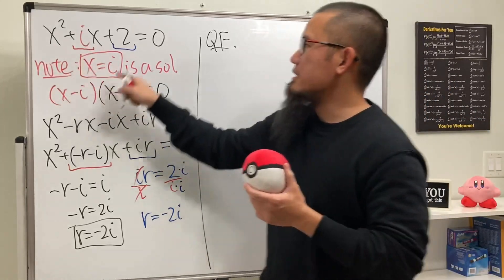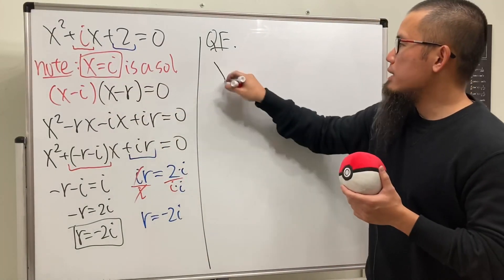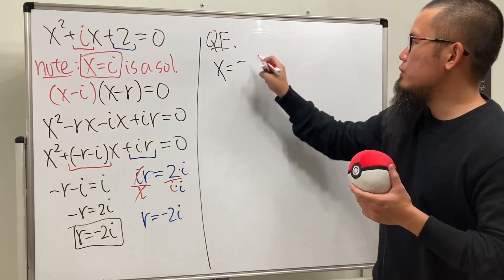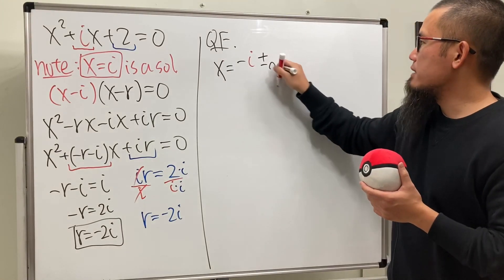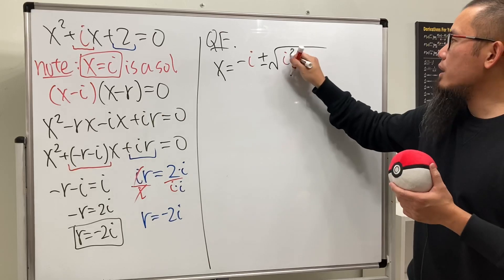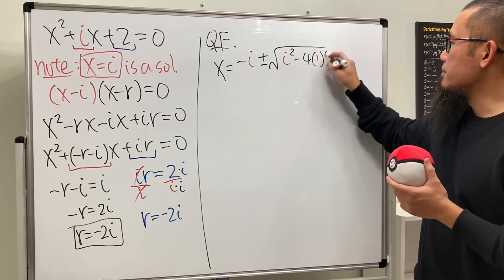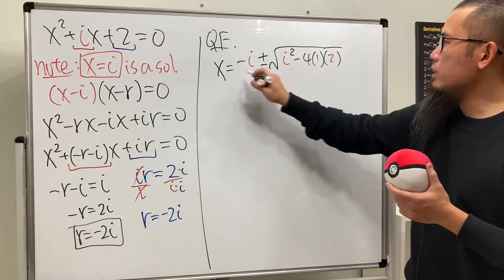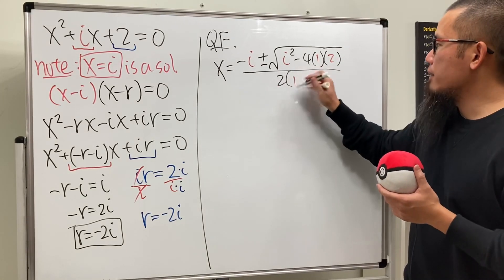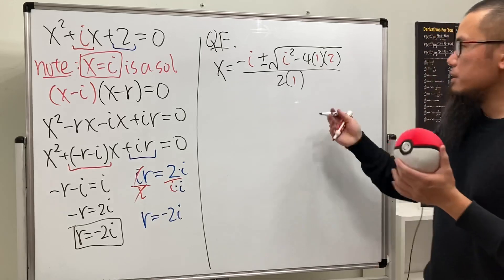and C is 2. So we know x equals negative B, which is i, and then we do plus or minus square root of i squared minus 4ac, so 4 times 1 times 2, and then all divided by 2 times 1. Work this out.